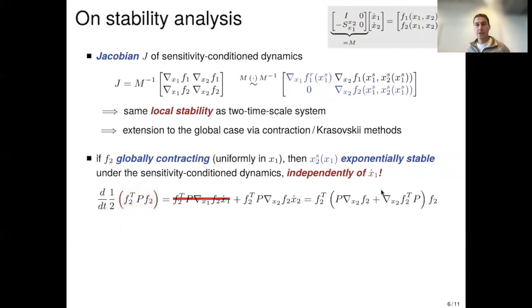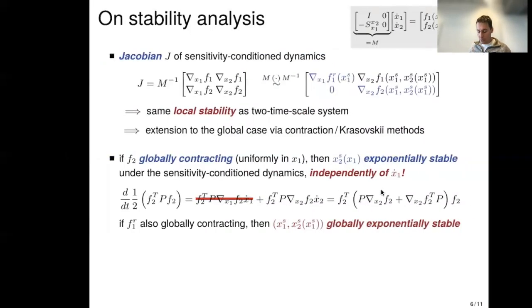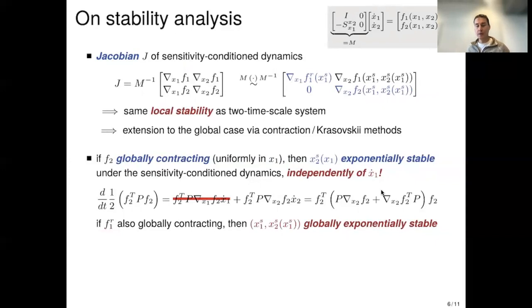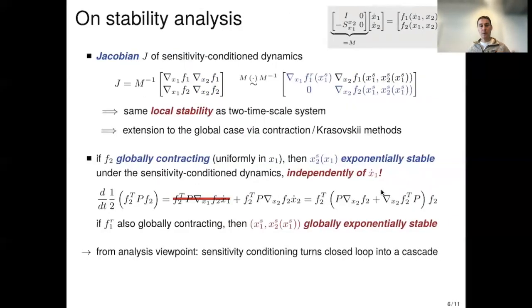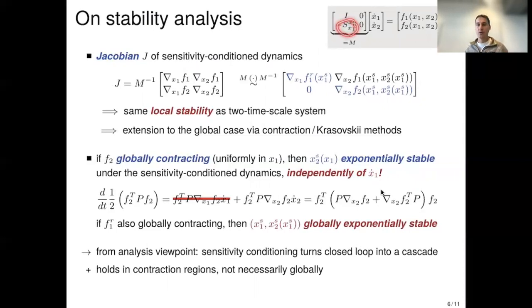This can also be done globally using contraction or Krasovsky methods. Constructing the Krasovsky-Lyapunov function — essentially f2 squared with some metric P — and taking the time derivative, which depends on x1-dot: the x1-dot term cancels due to the sensitivity term, leaving only the contraction condition on the f2 vector field, which holds independently of x1-dot. Moreover, if the reduced vector field is also globally contracting, the desired steady state (x1s, x2s(x1s)) is globally exponentially stable. The key takeaway: sensitivity conditioning turns a closed-loop system with a full-blown coupled Jacobian into a cascade, which simplifies both the Jacobian and Lyapunov conditions greatly.